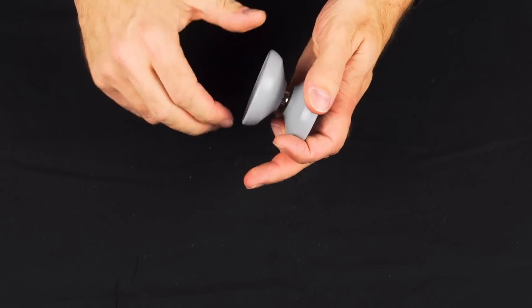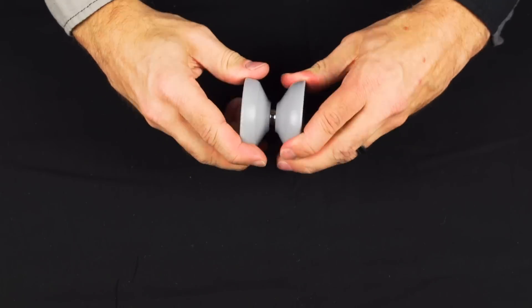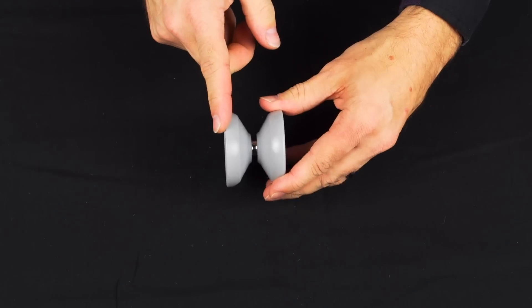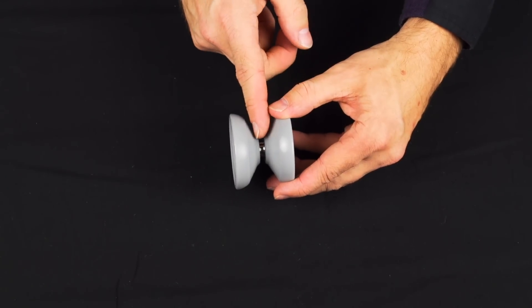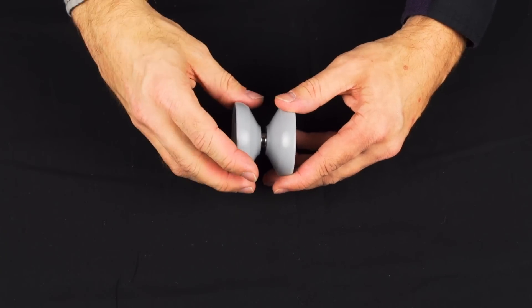When you get the yoyo put together, you'll see that it's basically a V shape, and V shapes tend to play a little bit faster, which is true of the Skyba. It also has a little step coming off the bearing, which helps it play better for off axis.